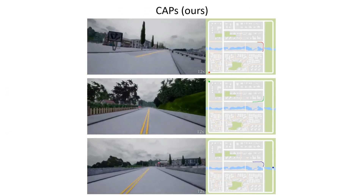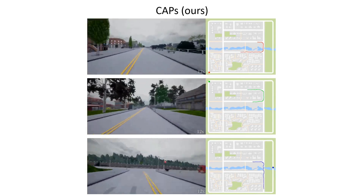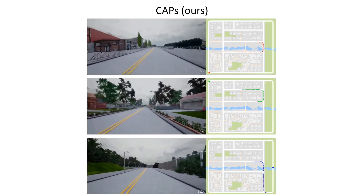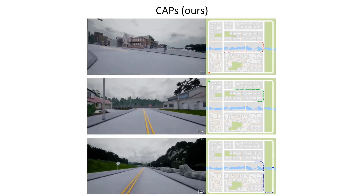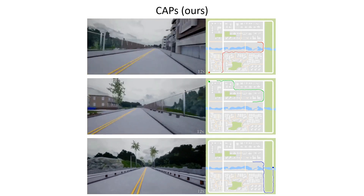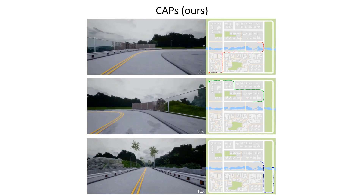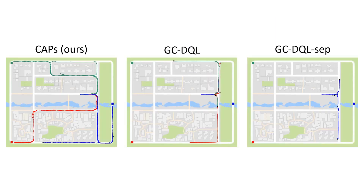We now show our CAPS approach accomplishing a goal-directed navigation task. The reward function is to avoid collisions, drive at 7 meters per second, stay in the right lane, and drive in the direction of the specified goal location, shown as a colored square on the map. Compared to goal-conditioned deep Q-learning and goal-conditioned deep Q-learning with separate value functions, our approach is better able to accomplish the navigation task.